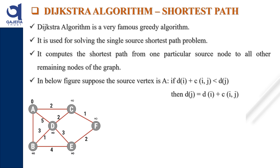For example, suppose I am in Surat right now. If I want to find the shortest distance from Surat to Baroda, Surat to Ahmedabad, Surat to Valsad, then we can use this particular algorithm. Because the source is the same — that is Surat — we are only finding the shortest path from source to destinations. It computes the shortest path from one particular source node to all other remaining nodes of the graph.